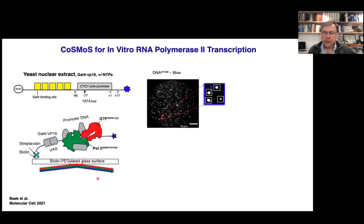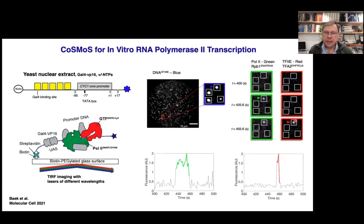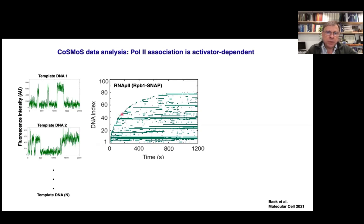Using this multi-color TIRF microscopy, we take movies and can pick out the region where each DNA sits, then follow each frame looking for factor association. Here's a polymerase molecule showing up, here's a TF2E molecule showing up on the same DNA. All those individual frames can be digitized — polymerase binding, then a little bit later TF2E shows up. It's a single-molecule assay, but we have 300 to 400 DNA spots per slide, so we can also do statistics.